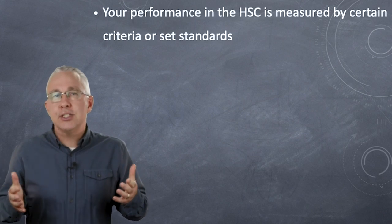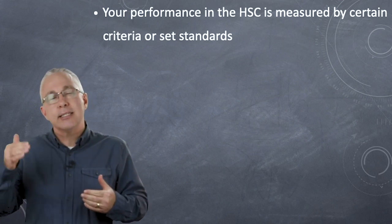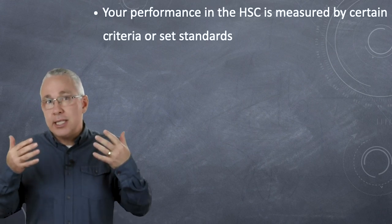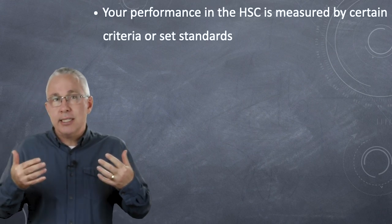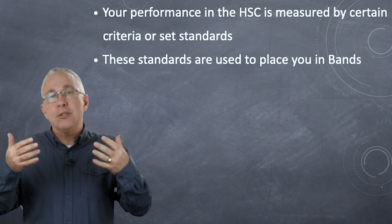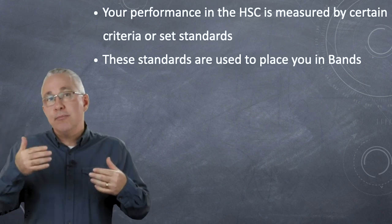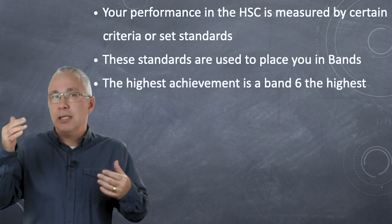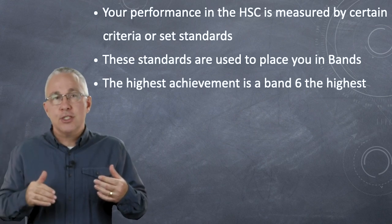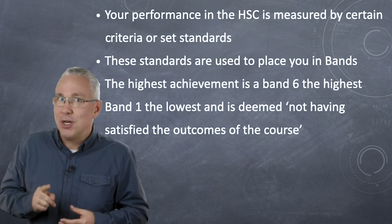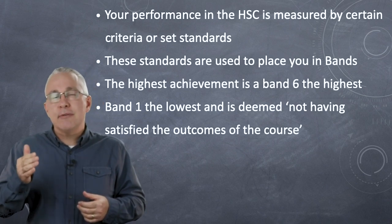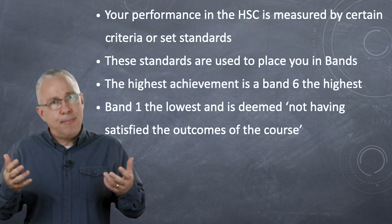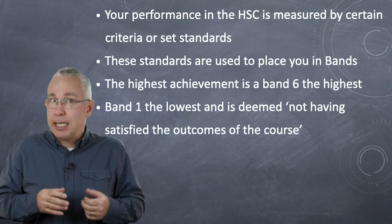In the HSC, your performance is measured against a set of criteria or standards, and it's those standards that allow us as markers to place you into certain bands based on whether you meet those particular standards. A band 6 is the top level, band 5 is lower and so forth, and if you get a band 1 — let's hope not — it basically means you haven't met the minimum standards to pass the course. So a band 2 is actually a pass.